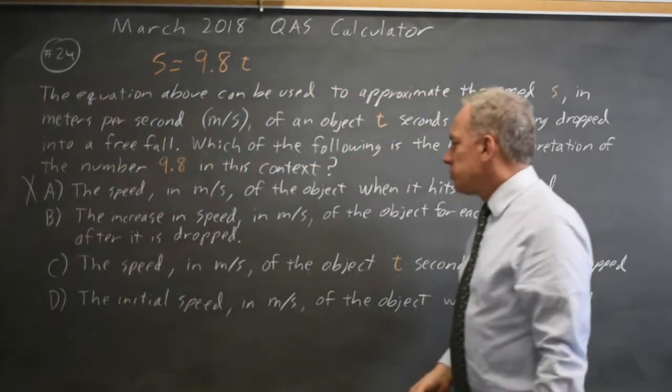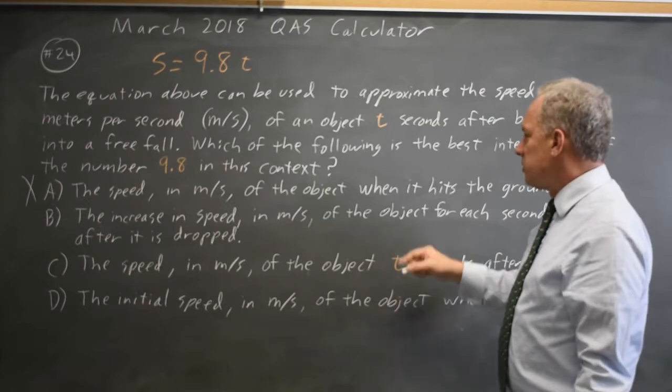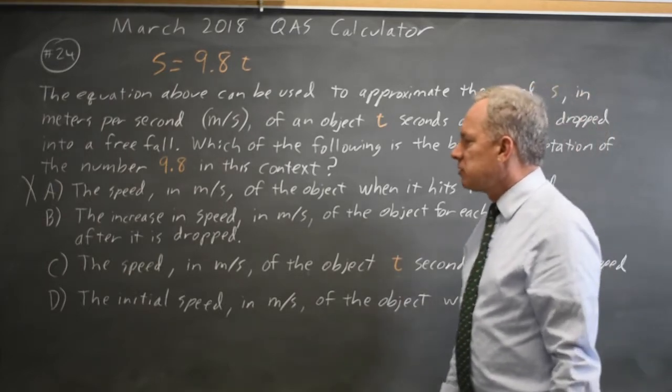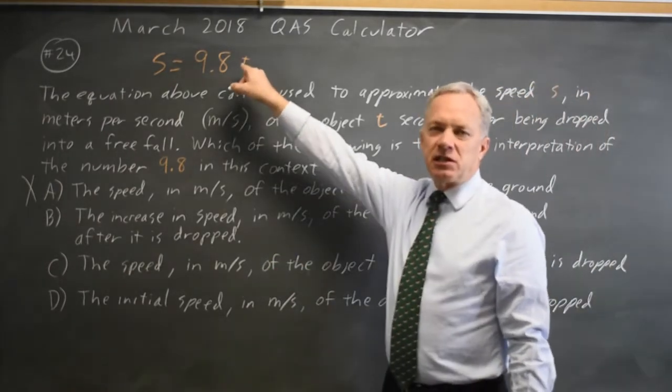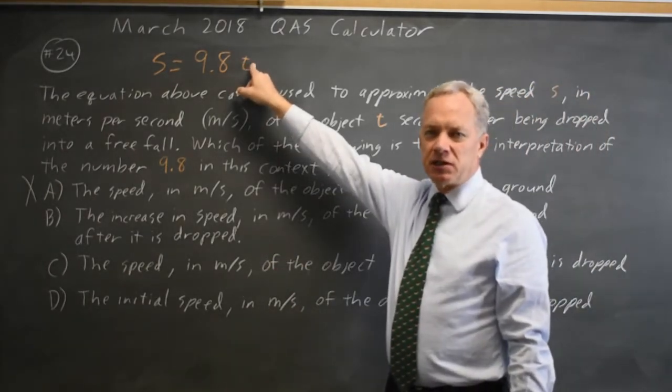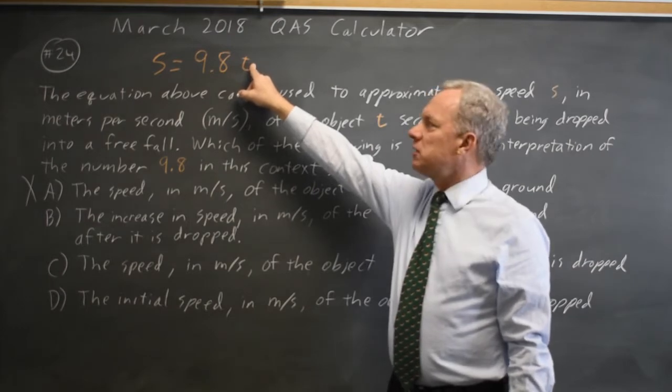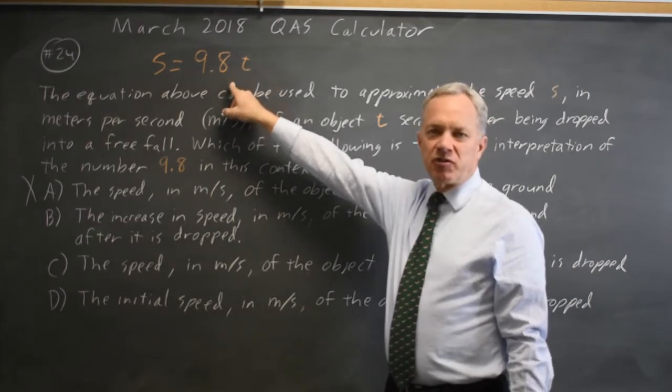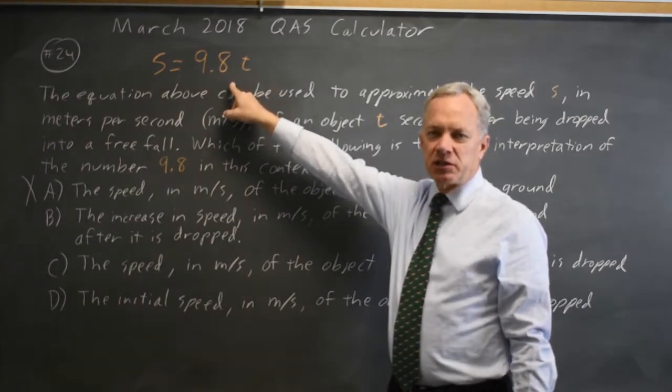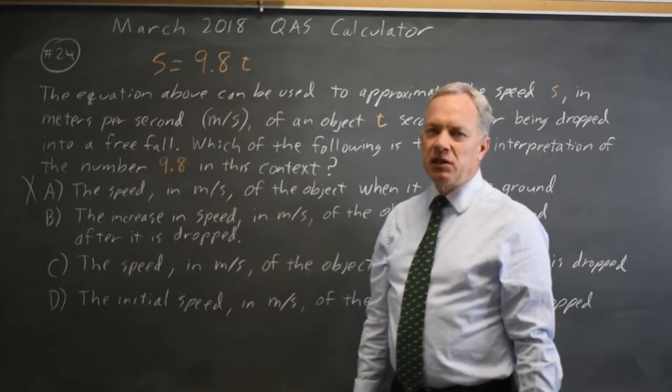Choice B: the increase in speed in meters per second for each second after it is dropped. Well, I just said at time t equals 0, the speed is 0. At time t equals 1, the speed is 9.8, so we did increase by 9.8 meters per second in the first second. At t equals 2, the speed increases by another 9.8 to 19.6.